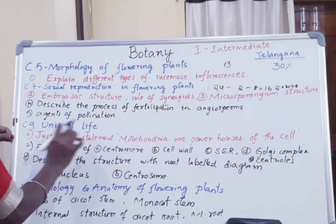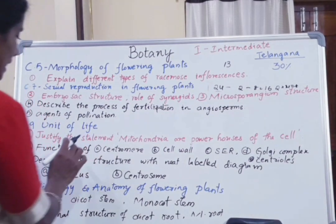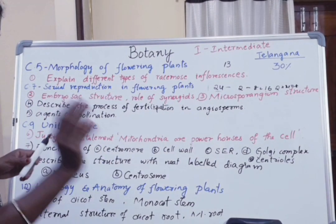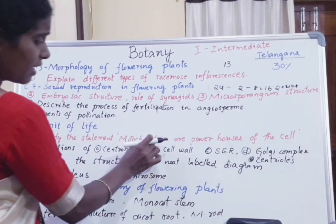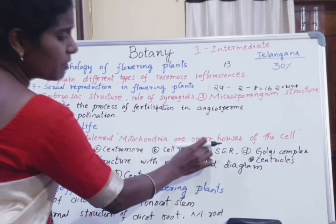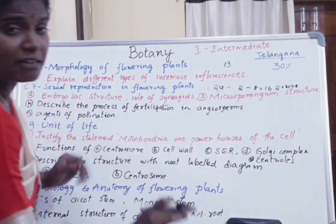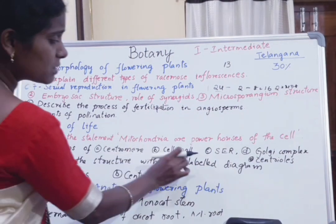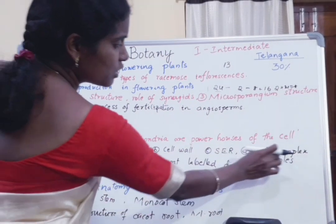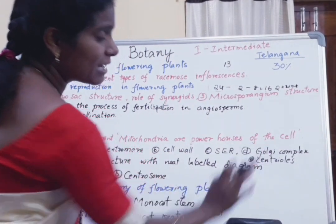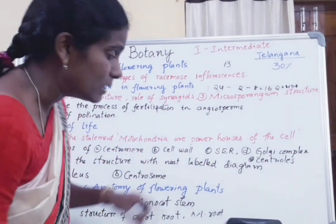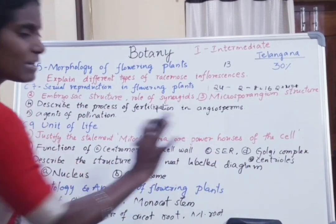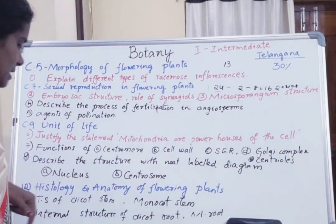Coming to the 9th chapter, unit of life — there are some questions here. Mitochondria: how we say it is the powerhouse of the cell — that is one. And functions of centromere, cell wall, smooth endoplasmic reticulum, golgi apparatus, and centrioles — these functions should be explained clearly.